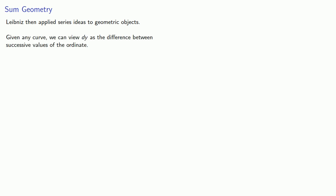So given any curve, we can view dy as a difference between successive values of the ordinate. So to Leibniz this meant that at some x value we have a y value, at the next x value we have a different y value, and dy is the difference between the successive values of the ordinate.